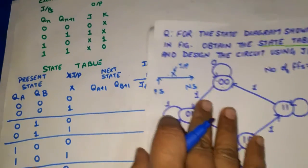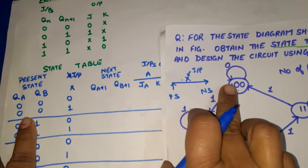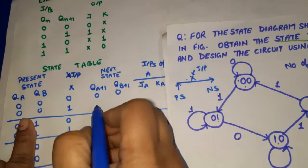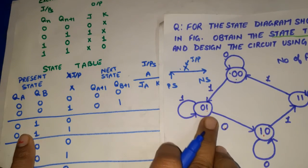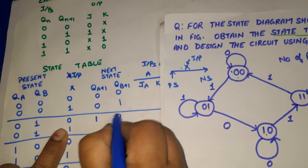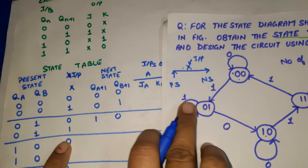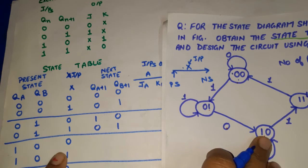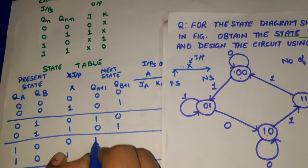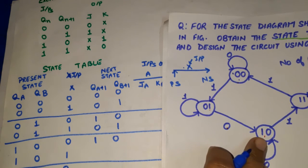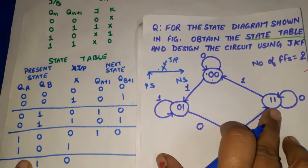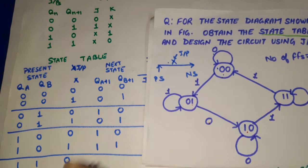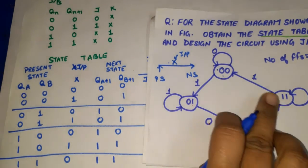Now filling in the next state column: For present state 00, input 0 → next state 00; input 1 → next state 01. For present state 01, input 0 → next state 10; input 1 → next state 01. For present state 10, input 0 → next state 10; input 1 → next state 11. For present state 11, input 0 → next state 11; input 1 → next state 00.